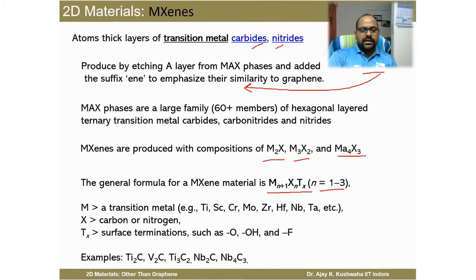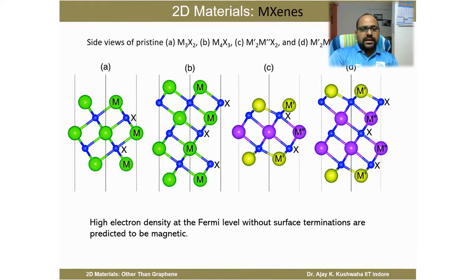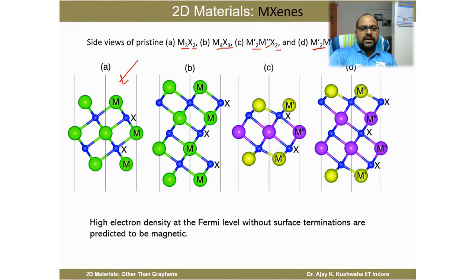In MXenes, M is the transition metal such as Ti, Sc, Cr, Mo, Zr, Hf, Nb, Ta, etc. X is either carbon, nitrogen, or a mix of both. The surface is open, allowing surface termination groups such as =O, -OH, or -F. Examples of MXenes include Ti₂C, V₂C, Ti₃C₂, Nb₂C, and Nb₄C₃. The formula gives compositions like M₂X, M₃X₂, and M₄X₃. The atomic arrangement varies based on how metals associate with carbon or nitrogen atoms.